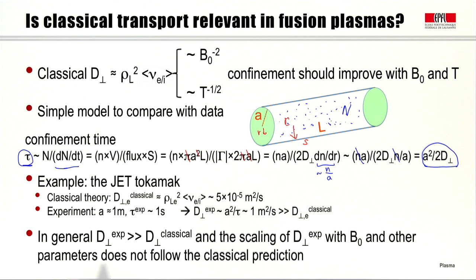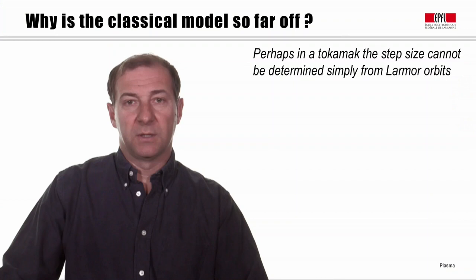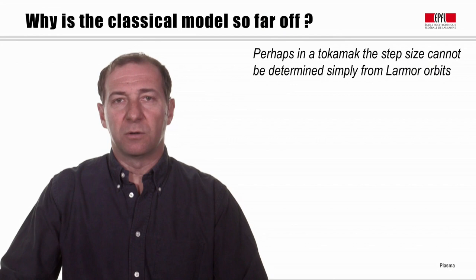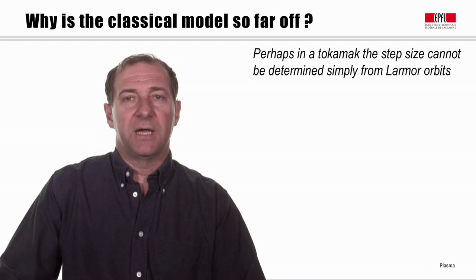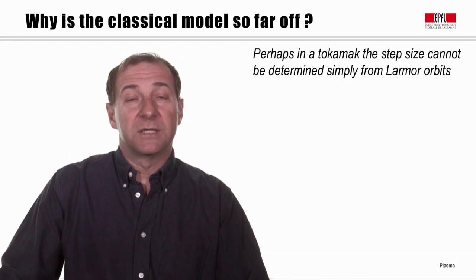This discrepancy — the experimental value being much, much larger than the classical theoretical prediction — is a very general observation across many fusion devices and magnetically confined plasmas, even at lower temperatures and lower densities. In general, the experimental diffusion coefficient is much larger than the classical value. Furthermore, the scaling of the experimentally estimated diffusion coefficient with parameters such as the magnetic field or temperature does not follow the classical prediction either.